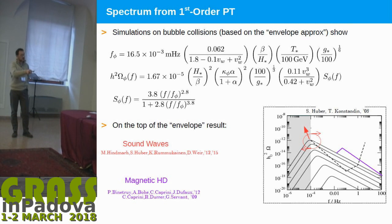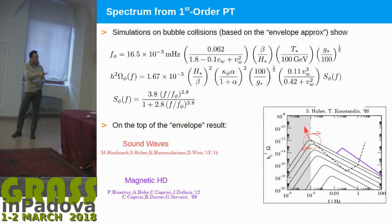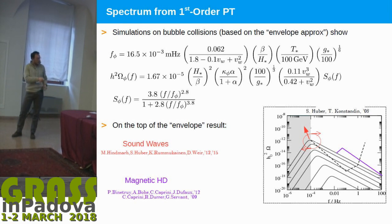On top of this signal, you can have further contributions. First, there is the sound wave, and second there is the magnetohydrodynamic contribution. The sound wave has an effect of increasing the peak and tilting the spectrum, while magnetohydrodynamics produces a secondary peak.